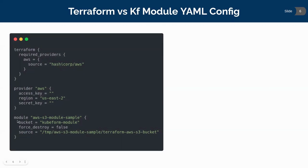In the third block, we can see it is a module block. This is our main block for using a Terraform module. This is our module name, and inside the module block we have given three fields: bucket (the bucket name), force destroy (which is false), and source, which references the Terraform module — in this case from a local directory. Bucket and force destroy are the input variables that the specific module allows us to provide.